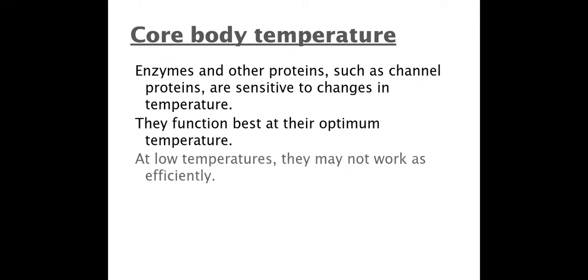For core body temperature, the main reason why we need to keep this within a certain range is so that we have an optimum temperature for our enzymes. The key thing with this one is linking it to metabolic reactions, such as aerobic respiration, because we need aerobic respiration to generate ATP, which is used for things like muscle contraction. Really, really important.